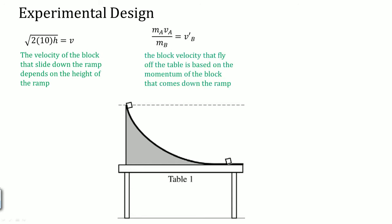Once it collides, the block's velocity that flies off the table is based on the momentum of the block that comes down the ramp divided by the stationary object's mass. Then, in the end, the block that travels the distance is based on the velocity left at that table and the time in the air. Notice that this V will give you this V.